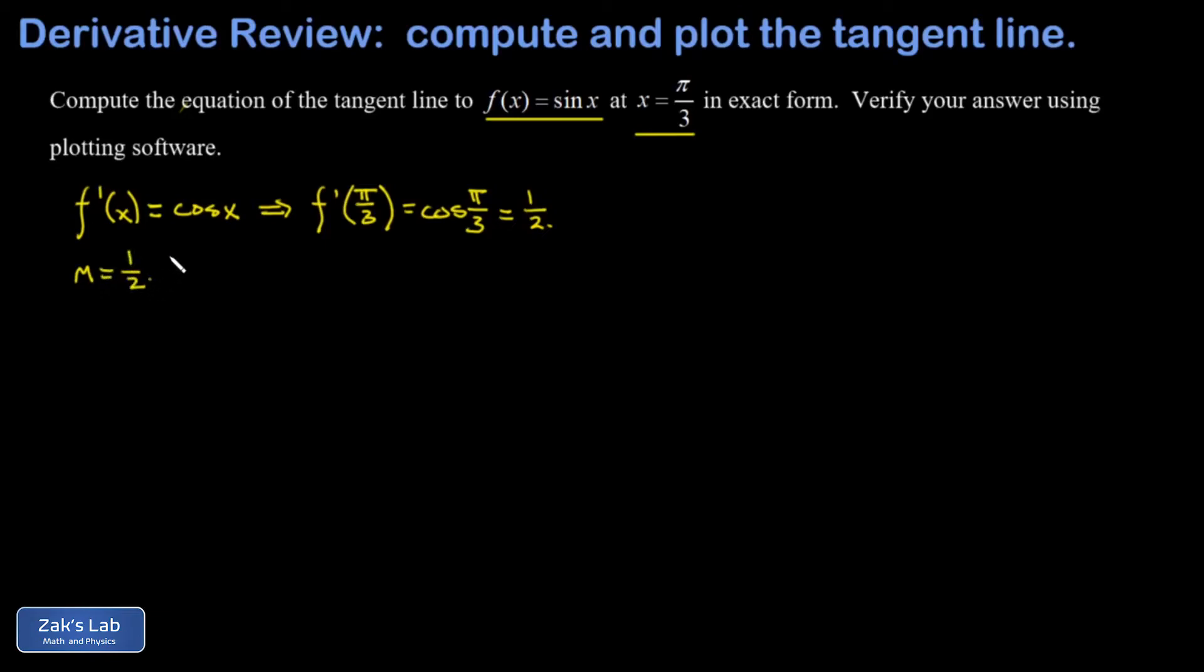And then I need to figure out the point that the tangent line passes through. Well, the x-coordinate of it is pi over 3, and then the y-coordinate of this point is just the value of the function at x equals pi over 3. And that f of pi over 3, that's the sine of pi over 3, which is root 3 over 2. And so the point for our tangent line is pi over 3, root 3 over 2.